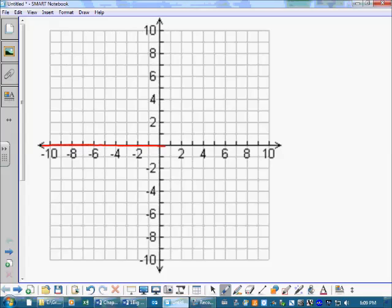This line right here is the x-axis, otherwise known as the horizontal axis, because it's, that's right, horizontal. Okay, so this is our x-axis.